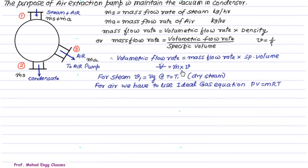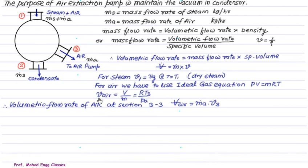So we can calculate volumetric flow rate of steam as well as volumetric flow rate of air. In this equation, if we put the mass of steam and instead of V we write V1 which is Vg at the given temperature T1, that is for dry steam, we can find out volumetric flow rate of steam. As far as the air is concerned, we have to use the ideal gas equation, that is PV equals to MRT. The specific volume of air is volume divided by mass, which is equal to RT divided by P.